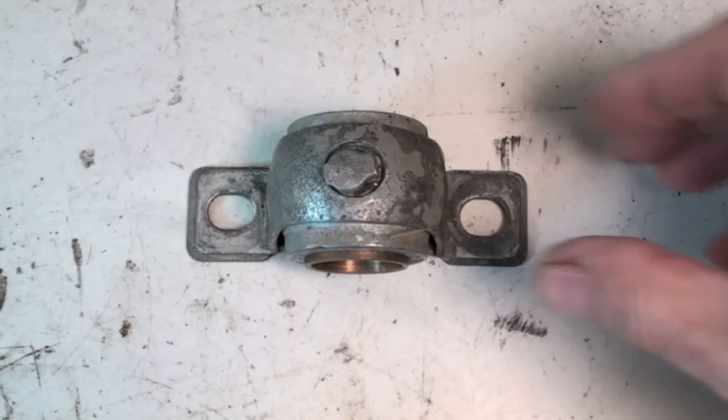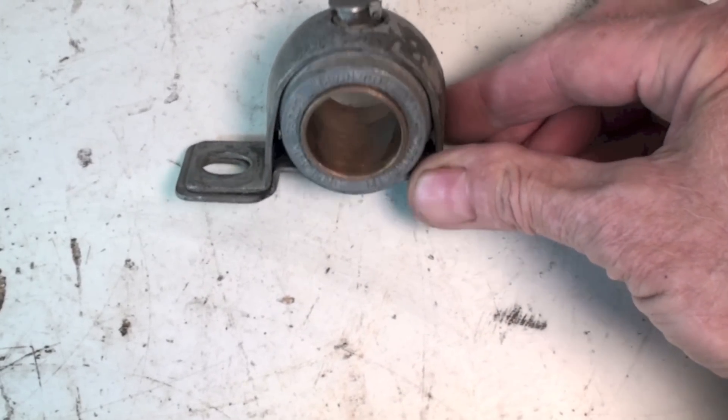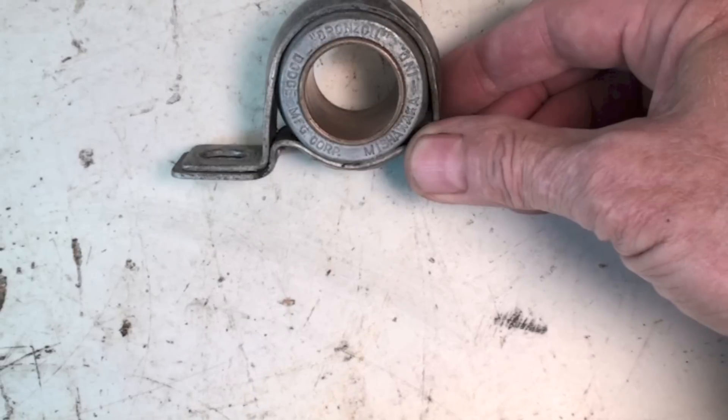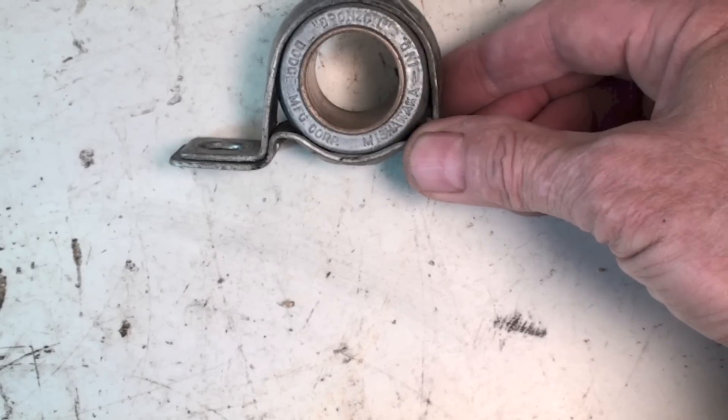Okay, what we're looking at here is a pillow block bearing, light duty bearing made for HVAC use. Inside there's a bronze bushing and I'm going to go over the bronze bushing more than anything else.